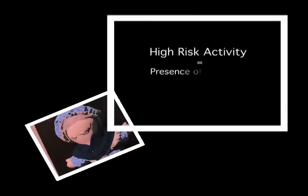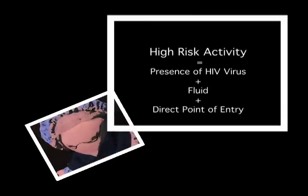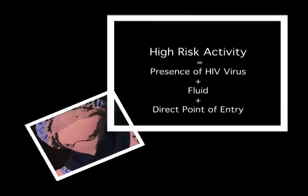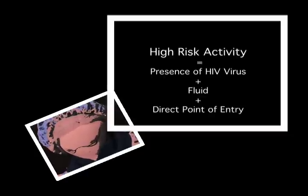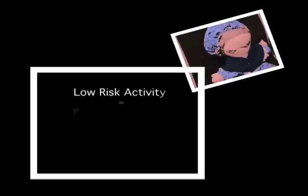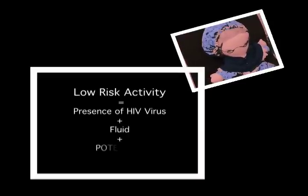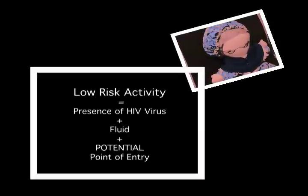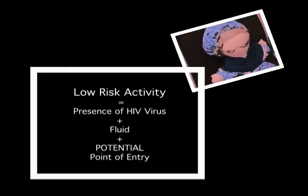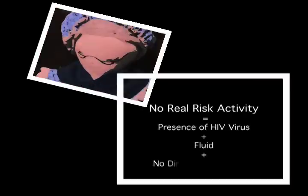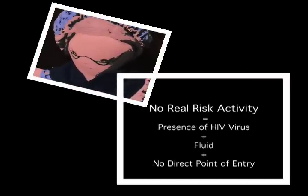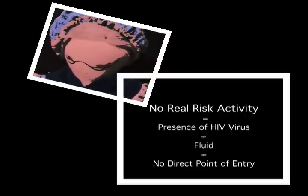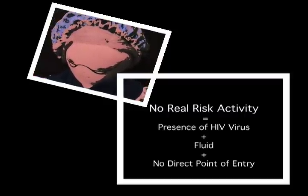High risk activities involve one of the four bodily fluids — blood, semen, vaginal fluids, or breast milk — and a point of entry. Low risk activity involves one or more of the four fluids and a potential entry point into the body. No real risk means that either you are completely alone, or with another person whose fluid only comes into contact with healthy skin.